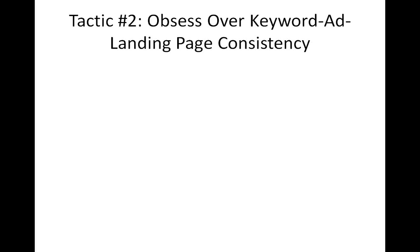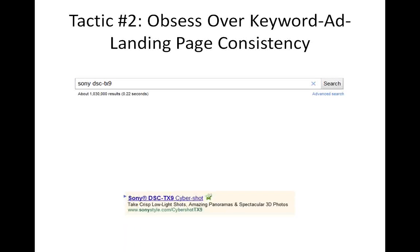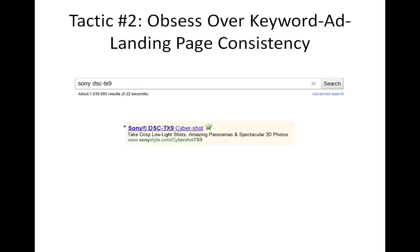The second tactic is obsess over keyword, ad, and landing page consistency. You want your keyword, your ads, and your landing page to be consistent throughout the whole process. For example, I did a search for Sony DSC-TX9 and found this ad — it says Sony and the model, everything I was looking for. The model is even in the URL, and when I click on it, I go to that exact page.